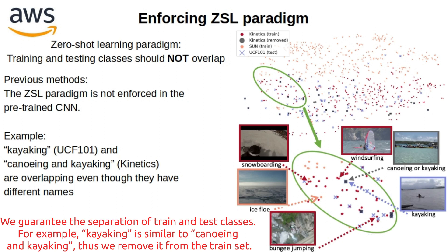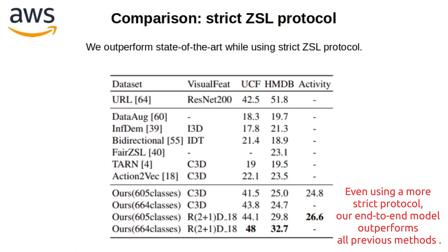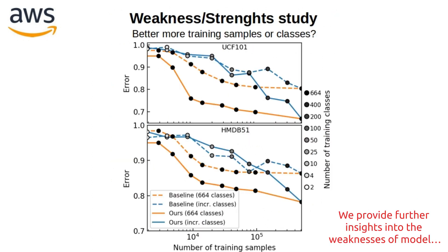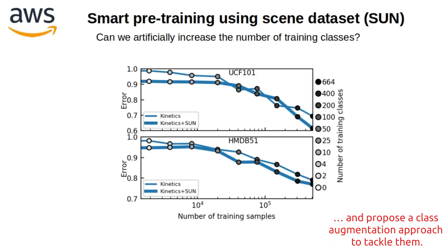We guarantee the separation of training and test classes required by Zero-Shot Learning. For example, kayaking is similar to canoeing, so we remove it from the training set. Even using a stricter protocol, our end-to-end model outperforms all previous methods. We also provide further insights into the weaknesses of the model and propose a class augmentation approach to tackle them.